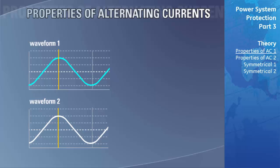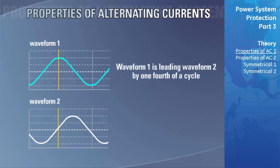We can only describe the phase shift between waveforms of the same frequency. If waveform one were leading waveform two by 90 degrees, waveform one would have reached its positive peak amplitude while waveform two is at its zero crossing. If both waveforms remain at the same frequency, the phase shift between them remains constant. Waveform one can be described as leading waveform two by one-fourth of a cycle, since 90 degrees is one-fourth of 360 degrees. A phasor diagram represents the relationship between two sine waves of the same frequency.